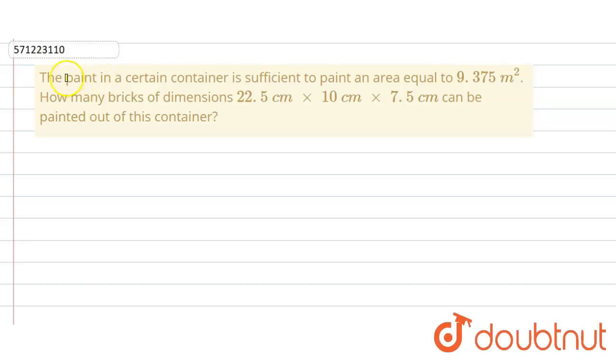In the given question, the paint in a certain container is sufficient to paint an area equal to 9.375 meter square. We have to find how many bricks of dimension 22.5 cm × 10 cm × 7.5 cm can be painted out of this container.